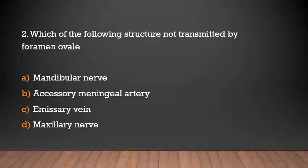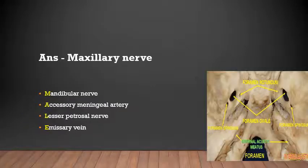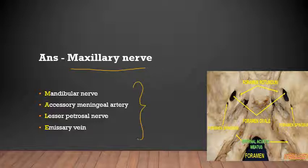Which of the following structures or nerves are transmitted by foramen ovale? Mandibular nerve, accessory meningeal artery, emissary vein, or maxillary nerve? The answer is maxillary nerve is not transmitted — foramen ovale transmits the mandibular nerve, accessory meningeal artery, lesser petrosal nerve, and emissary veins. We can easily remember these structures using the mnemonic MALE.